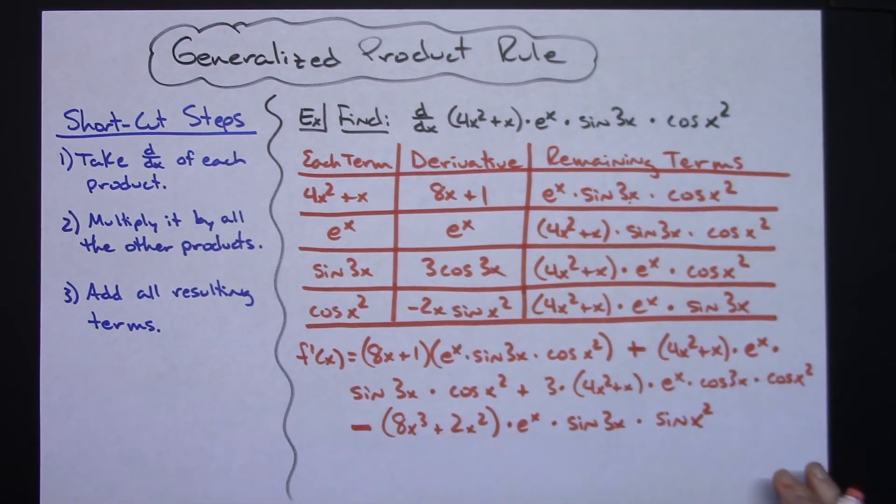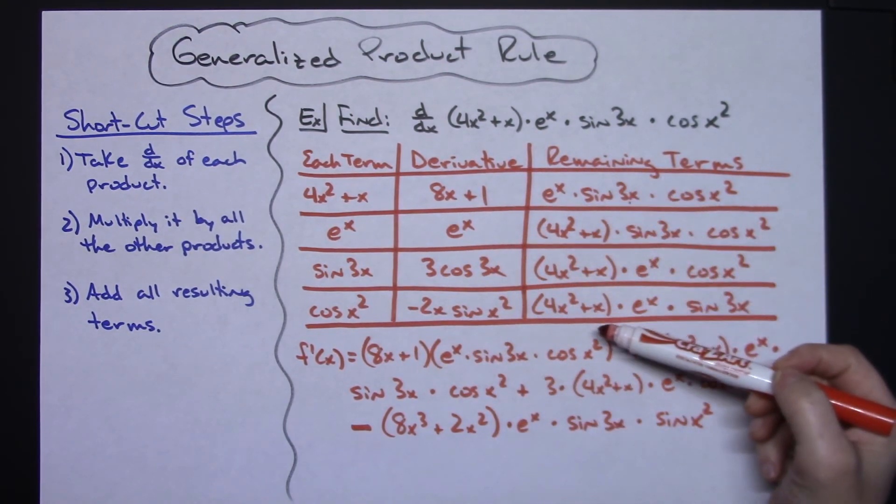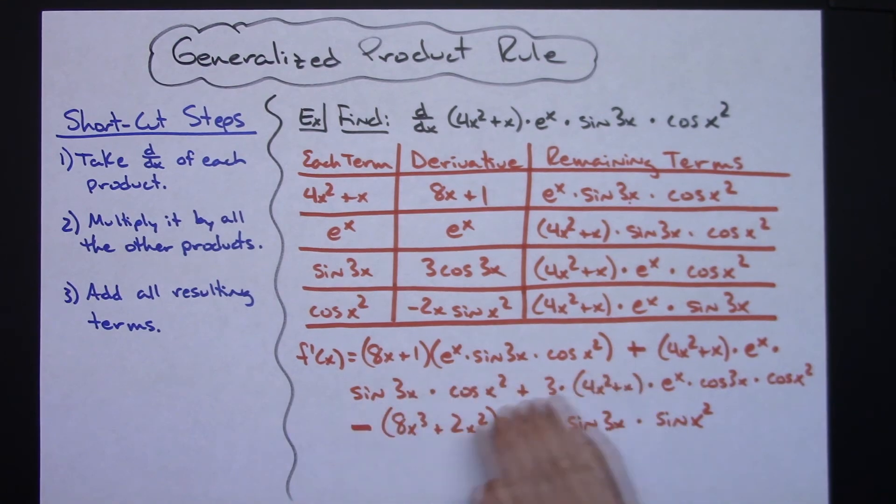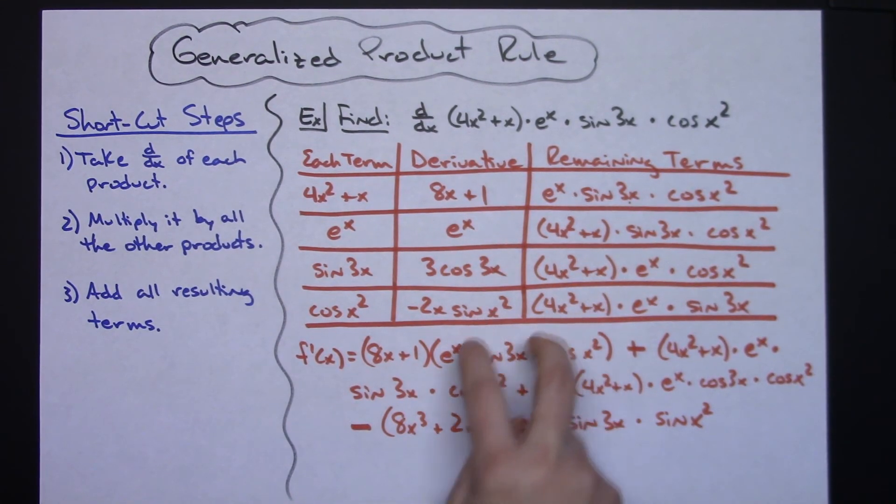So great big long one. And then definitely I couldn't write it all on one line there. But much, much quicker, I think, than trying to do a traditional derivative where you're writing it all out left to right across the thing. But make that little chart. Take each one of those terms. Take the derivative. Write down all the remaining terms. And then your final derivative will be the product of each one of these added together.